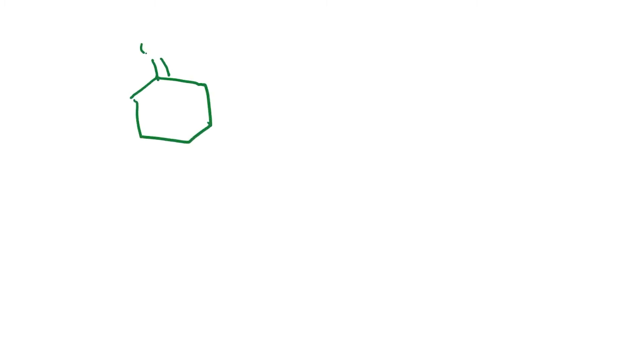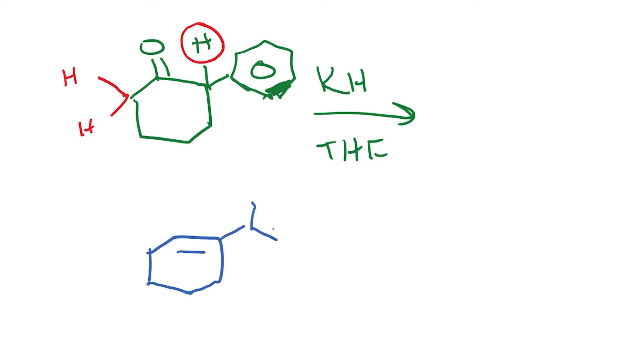Let's say we take this ketone with a benzene ring alpha to it. When we react this with potassium hydride in THF, again we have a choice. The choice is between this hydrogen or one of these two hydrogens. Let's look at the enolate that is formed. If this hydrogen is picked up and you end up with an enolate, it's going to look something like this, with O minus and K plus.